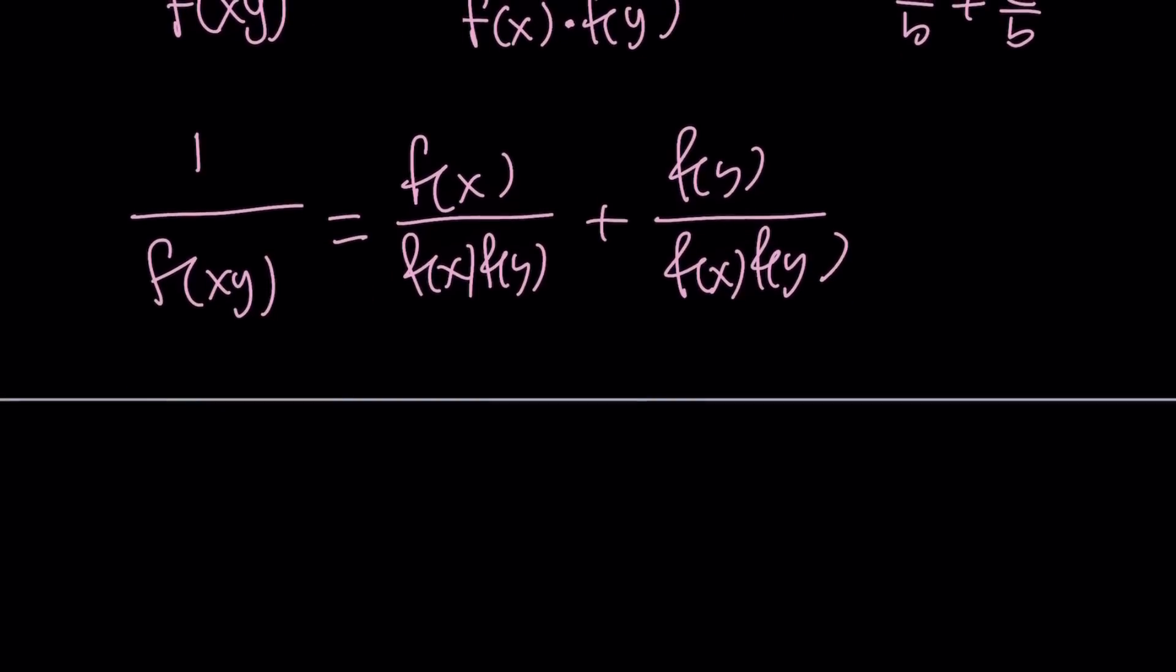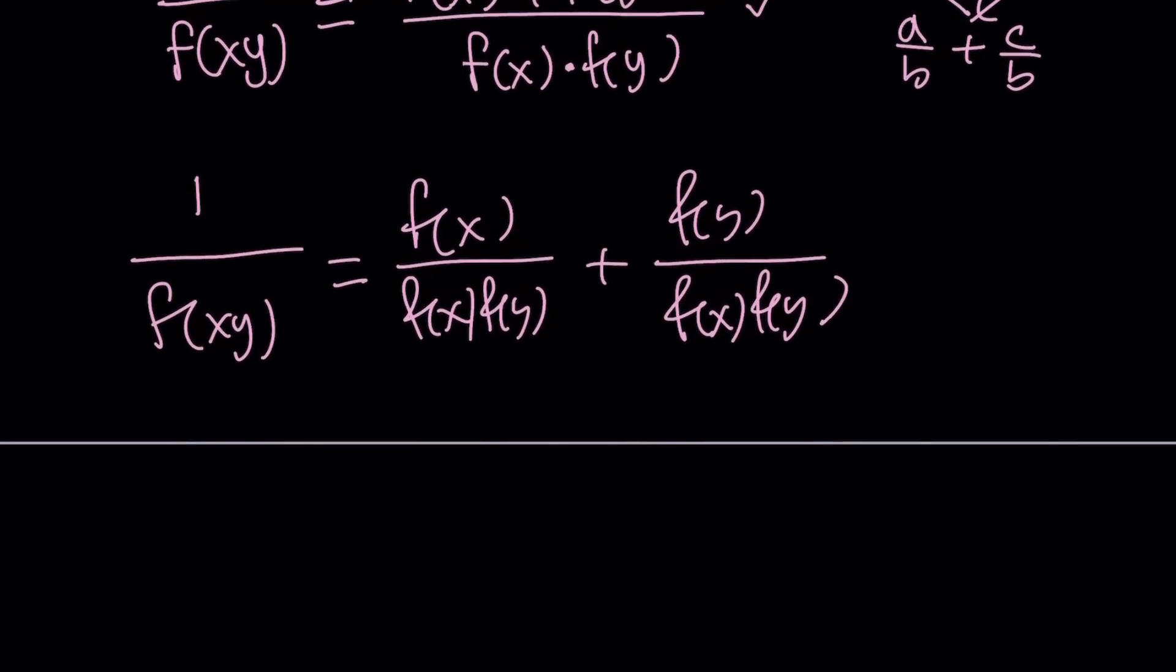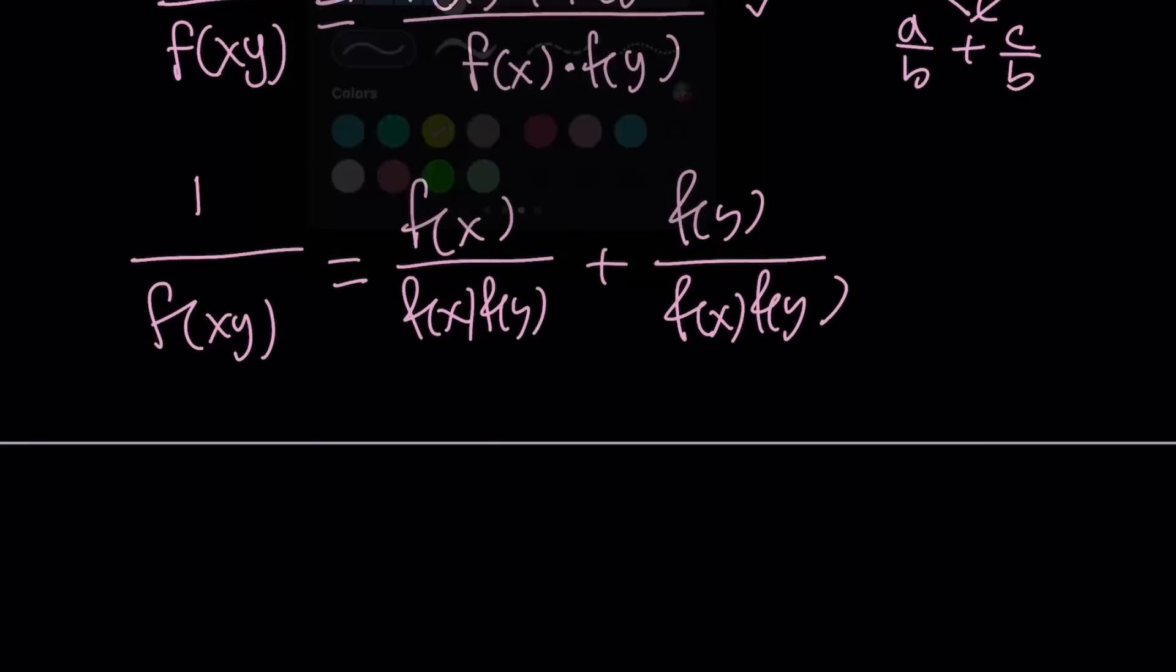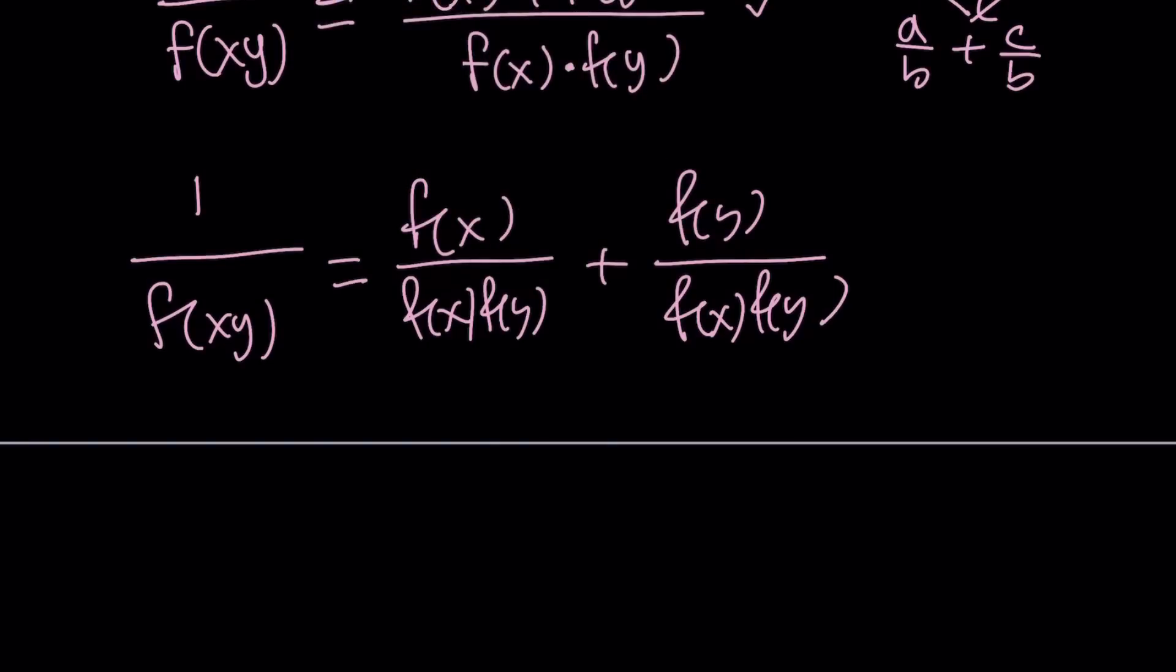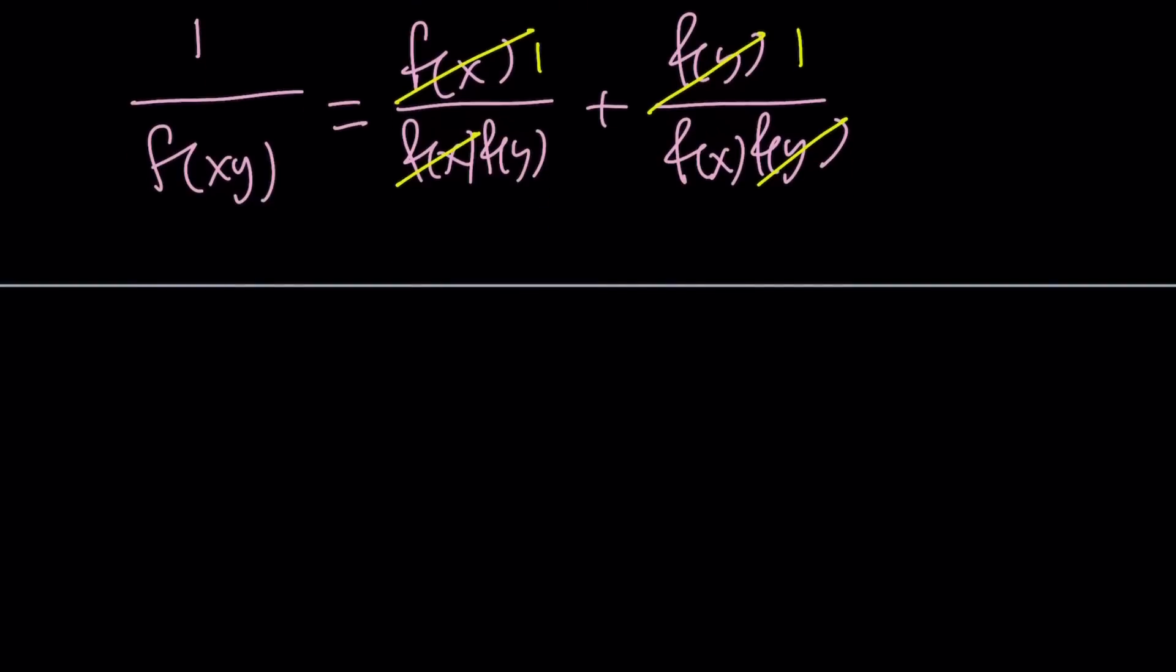Okay. Let's see how we can go from here. Now this expression can be simplified as long as f of x does not equal zero, right? So we're going to go ahead and cancel out the f of x. That's going to leave us with a 1 and then cancel out f of y. That gives us a 1 here as well. So now we get the following.